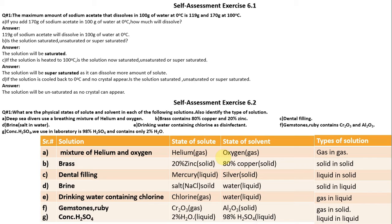To summarize: in the mixture of helium and oxygen, helium is the gas solute and oxygen is the gas solvent. For brass, zinc is the solid solute and copper is the solid solvent — solid in solid. Mercury is liquid solute and silver is solid solvent.